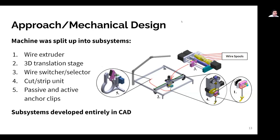Using this information, we designed the machine in five subsystems. These subsystems are the wire extruder, the three axis translation stage, the wire switcher and selector unit, the cutting and stripping unit, as well as passive and active anchor clips attached to a pegboard underneath the machine. These systems were designed entirely in CAD because I completed this design work over the summer period, when I didn't have access to the lab or testing materials due to working remotely. I will now go briefly into the functionality and design of each of these subsystems, starting with the wire extruder.